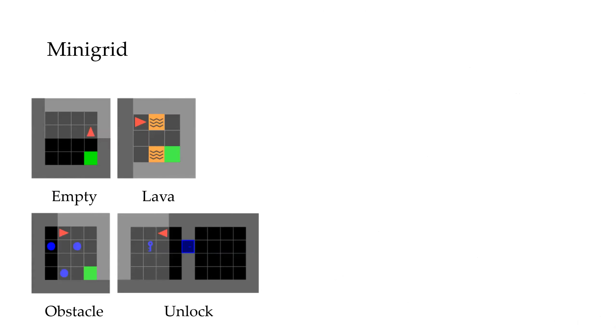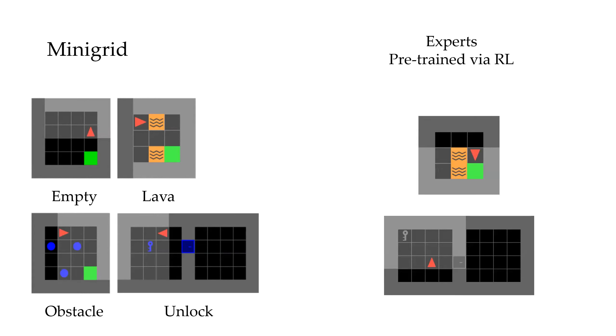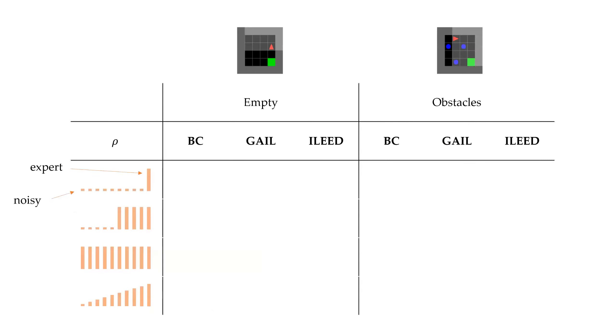We first test our claims on simulated mixtures of experts using mini-grid environments, where we pre-train experts using reinforcement learning and inject varying levels of uniform noise. Here, orange bars show the distribution of expertise in the populations. We see that ILEAD outperforms both behavioral cloning and GALE in all settings for both environments. This is expected since ILEAD can directly model the noise using its framework.